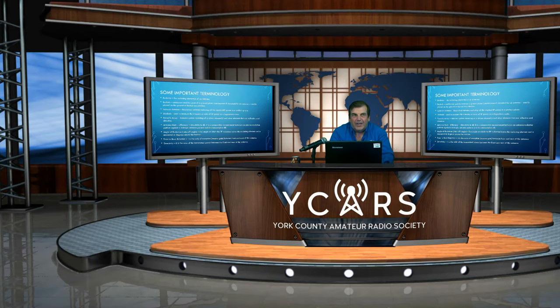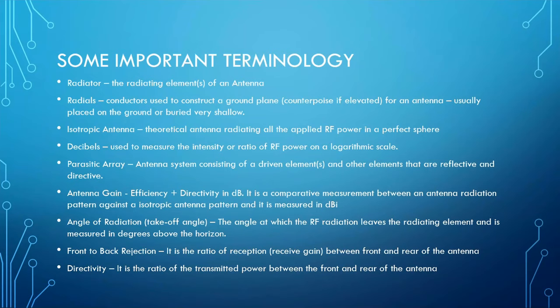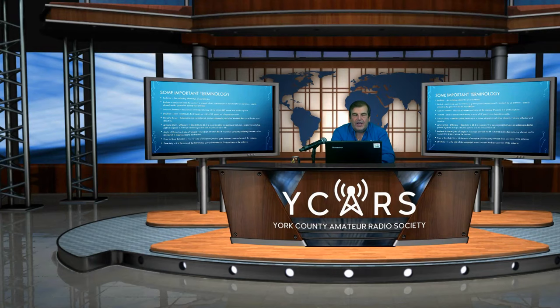Angle of radiation is your takeoff angle. The lower the takeoff angle, the longer the skip. When chasing DX, you want 20 degrees of launch angle or lower for long skips. NVIS antennas radiate straight up at nearly 90 degrees, causing the signal to go up and come straight back down. Front-to-back rejection refers to how much difference there is on the receive side between where you want signal to come from versus the back of the antenna, so you can reduce offending signals.